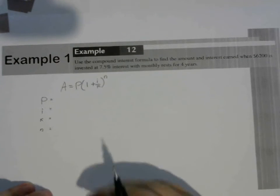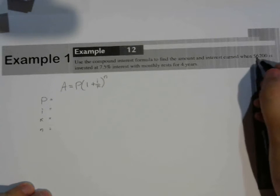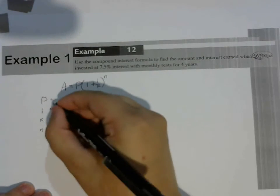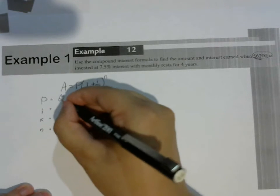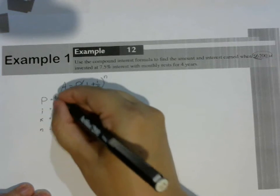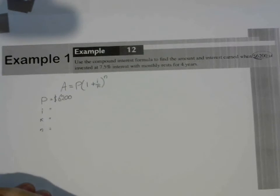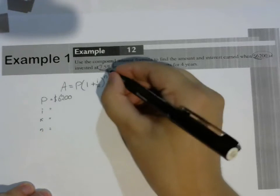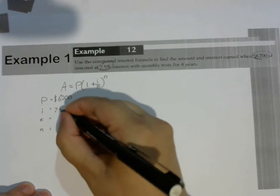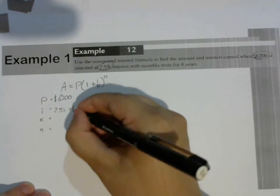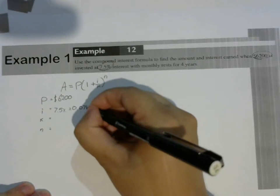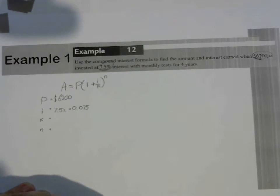My principal is $6,200. The interest rate is 7.5%, which as a decimal is 0.075.